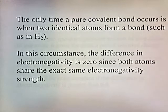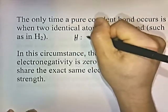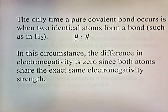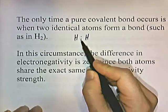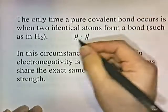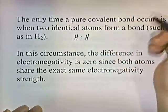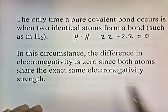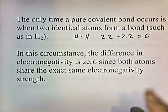The only time a pure covalent bond occurs is when two identical atoms form a bond, such as H2. If you have two hydrogen atoms bonded together, the difference in electronegativity is zero since both atoms share the exact same electronegativity strength. The electronegativity of hydrogen is 2.2, so 2.2 minus 2.2 equals zero — no difference in electronegativity, and the electrons stay in the middle.